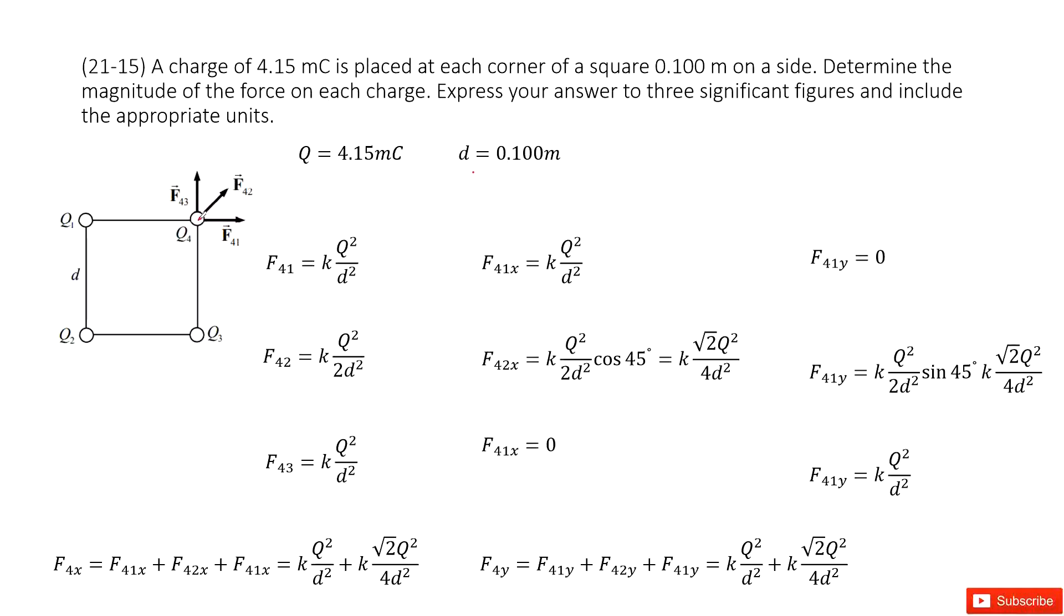So for particle 4, we can see there is an electric force between charge 4 and charge 1, a repulsive force. It's pointing to the x component. So we can write the magnitude electric force F401 as kq²/d². And this force is just pointing to the x component. At y component, it's zero. So x component is kq²/d², y component is zero.